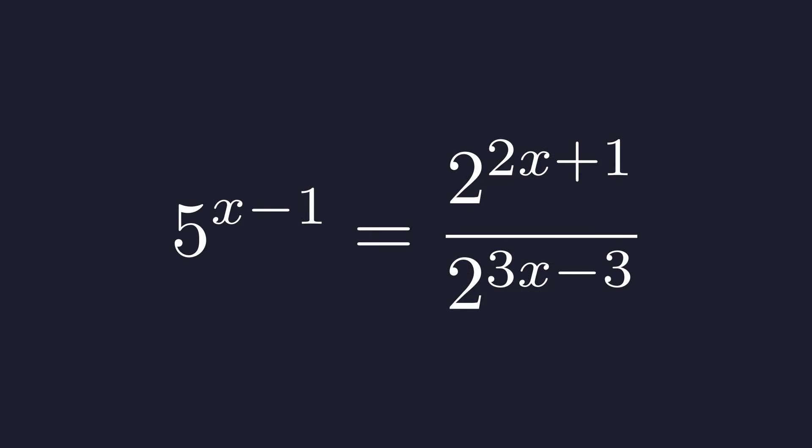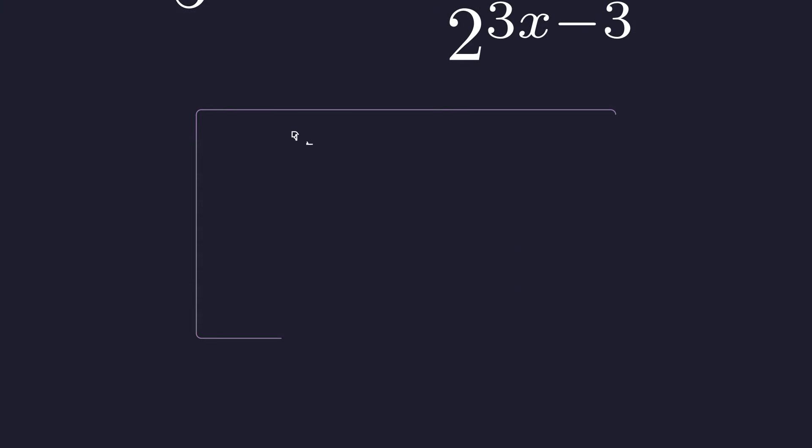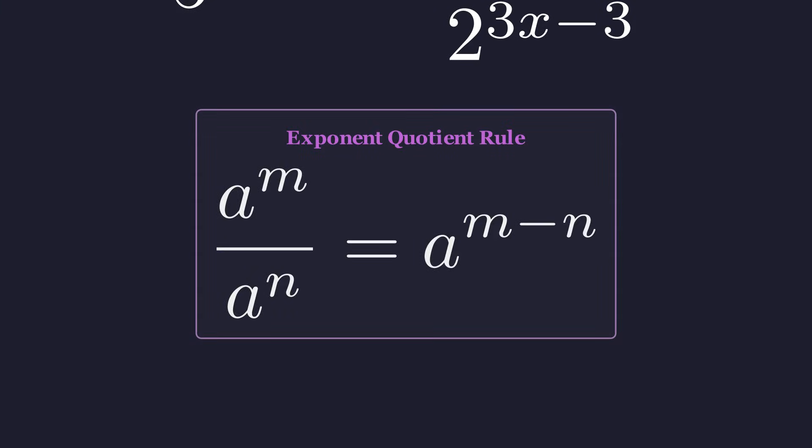This isolates the term with base 5 on the left. When dividing exponential terms with the same base, we subtract the exponents.